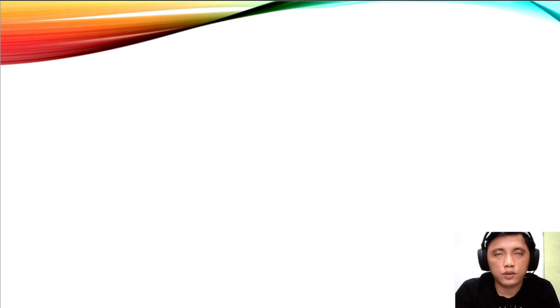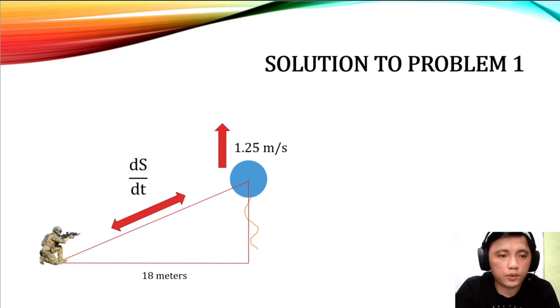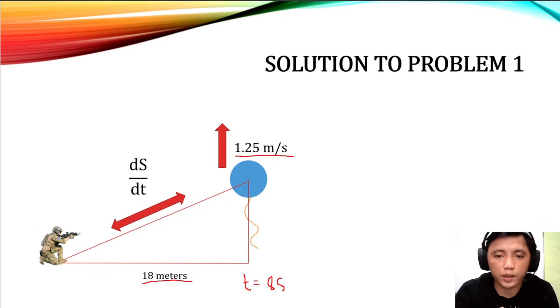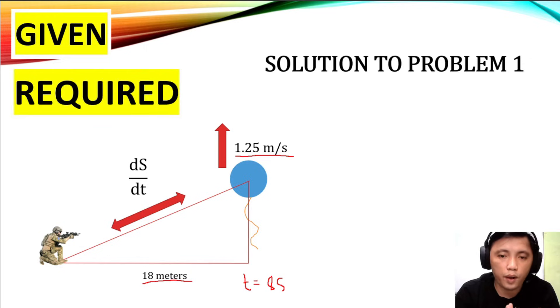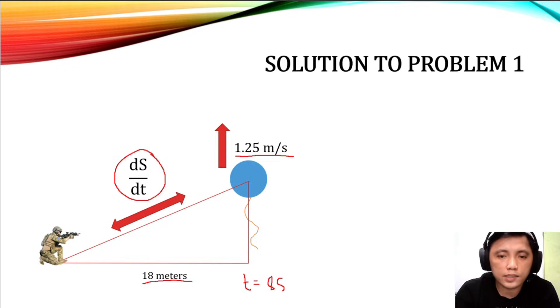I will teach you a very efficient approach in solving differential time rate problems using the conventional solution. The first step is to list out all the given values. The given values are 1.25 meters per second — the rate at which the balloon is rising vertically — the distance between the observer and the balloon, and the time which is 8 seconds. After the given, we find what is required: ds over dt.